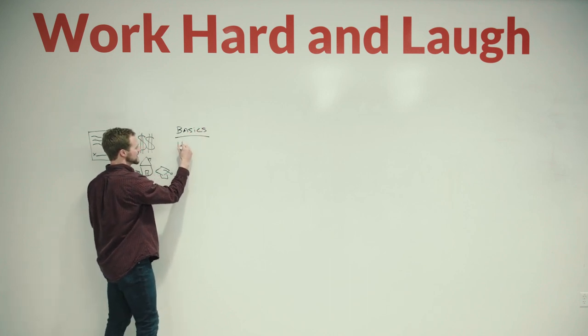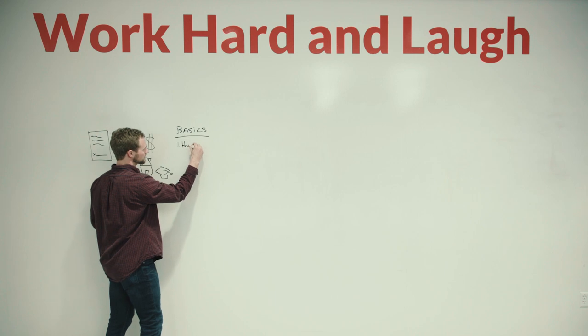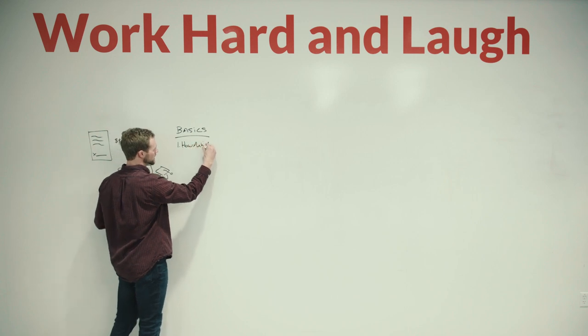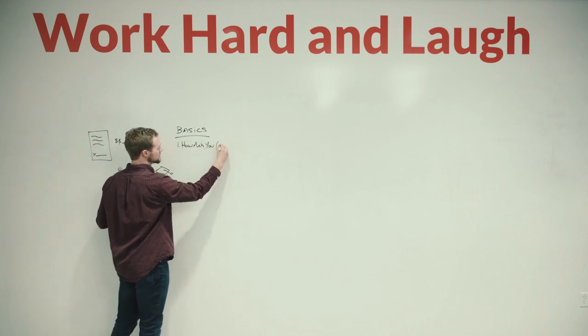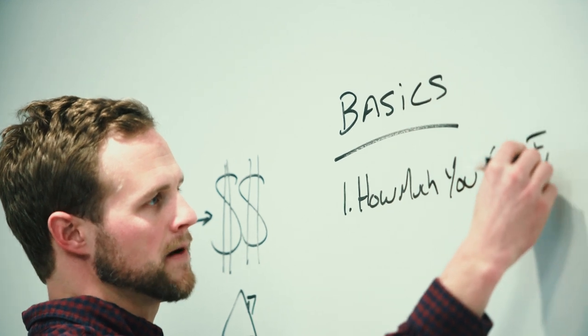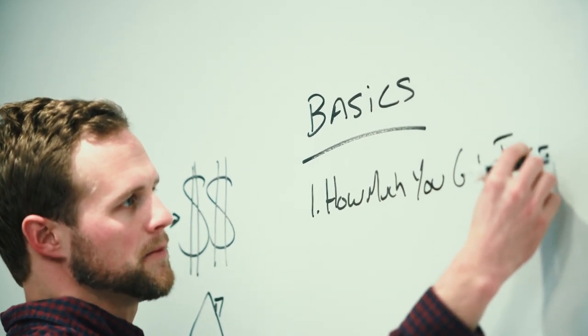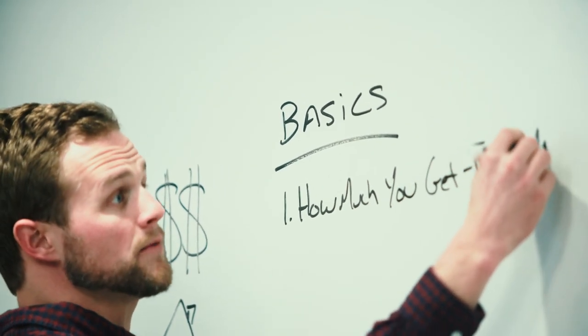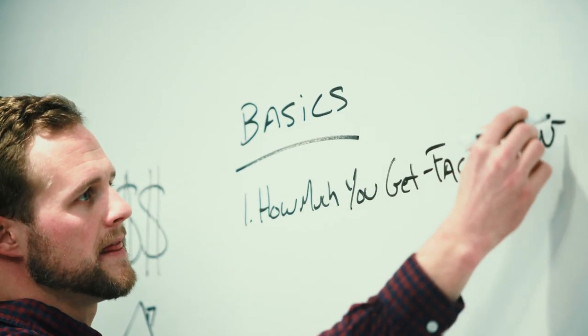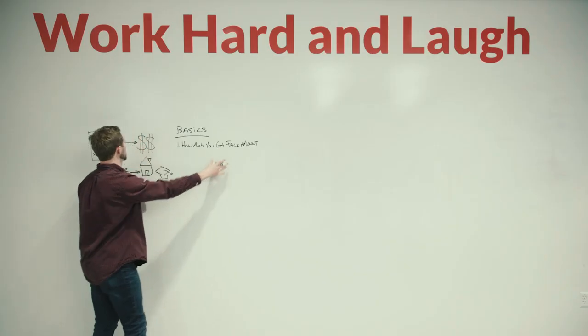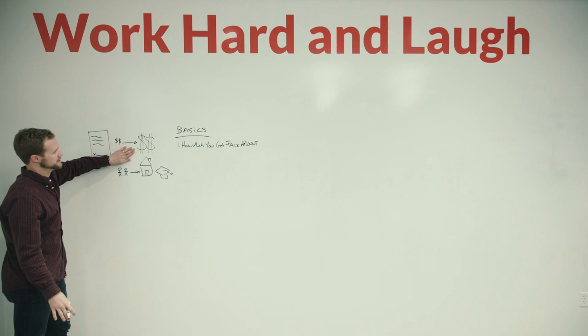The first thing you need to know is how much you get. In the life insurance world, this is known as face amount, and face amount typically ranges from a couple thousand dollars to a couple million dollars or more, and this is the amount of money that your beneficiaries get if you pass away.